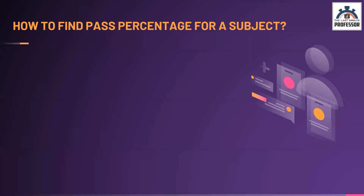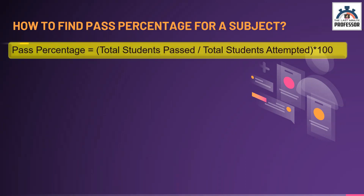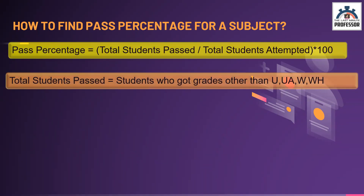How shall we find the pass percentage of a particular subject? Pass percentage is nothing but the total number of students passed, divided by the total number of students who attempted, multiplied by 100. Total students passed means students who got the grades O, A plus, A, B plus, or B — in other words, students who got grades other than U, UA, W, or WH.